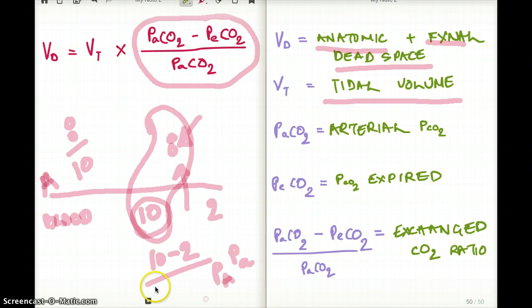PaCO2 here is oxygen. And PeCO2 is really 10 minus 2, which is 8. But the total PaCO2 was 10. So to get this ratio, what we do is 8, which is 10 minus 2, divided by 10, which was our original PaCO2, is going to give us this entire ratio.